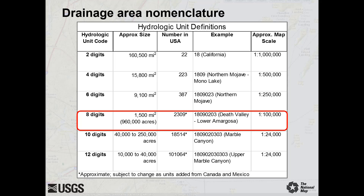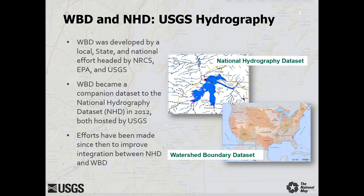The names are based on features in the Geographic Names Information System. WBD was developed by a local, state, and national effort headed by the Natural Resources Conservation Service, Environmental Protection Agency, and USGS. WBD became a companion dataset to the National Hydrography Dataset in 2012, both hosted by the USGS.